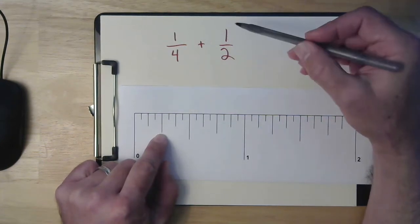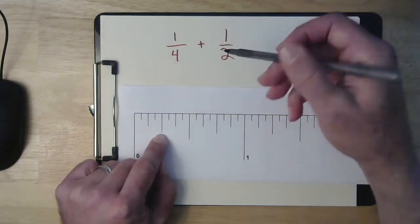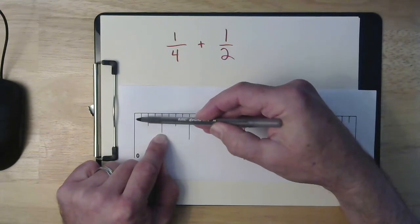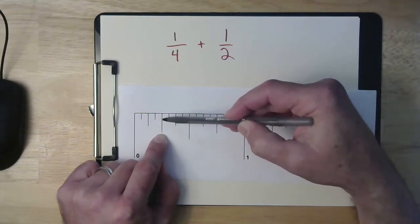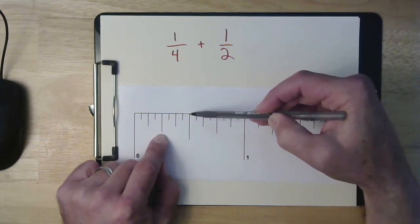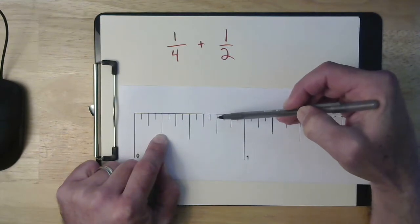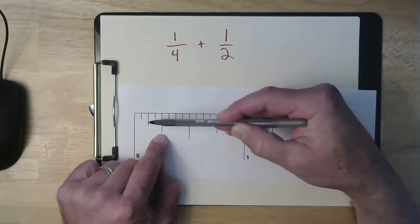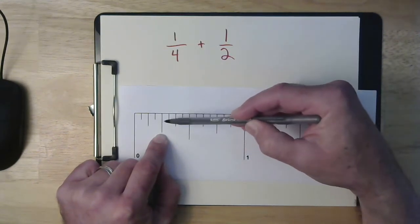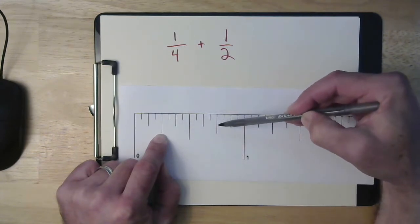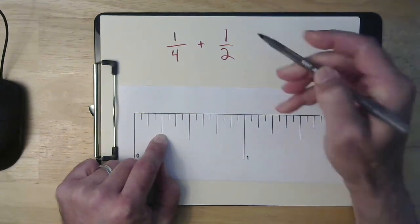And then if I want to add a half, well we know a half is the same distance from here to here. So that means I'm going to go one-fourth and another fourth here. So then here's one-fourth plus one-half. So it lands us right here. That's three quarters.